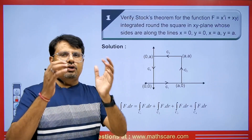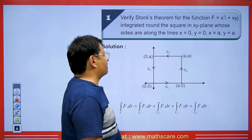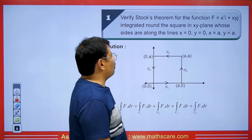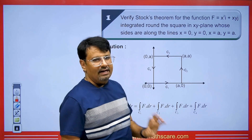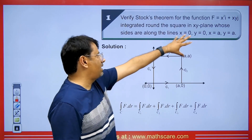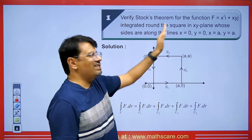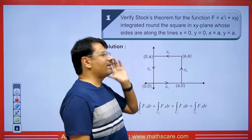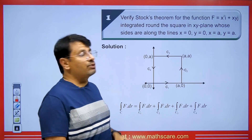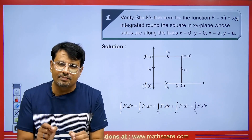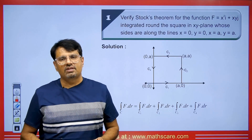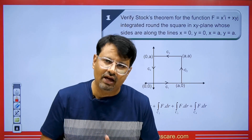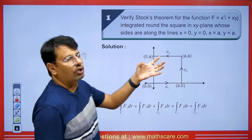Let's look at another question. Verify Stokes theorem for f = x²i + xyj, integrated around the square in the xy plane with sides x = 0, y = 0, x = a, and y = a. We need to solve this using both Stokes theorem and line integral, and the answers should be exactly the same. If they match, Stokes theorem is considered verified. Let's apply Stokes theorem first.